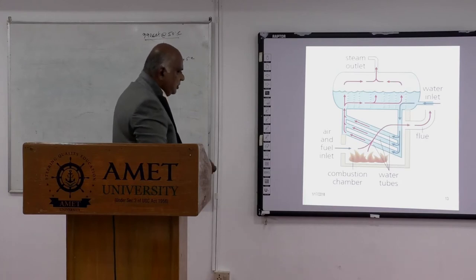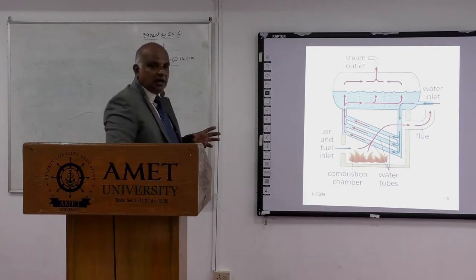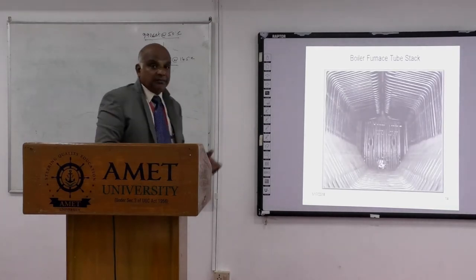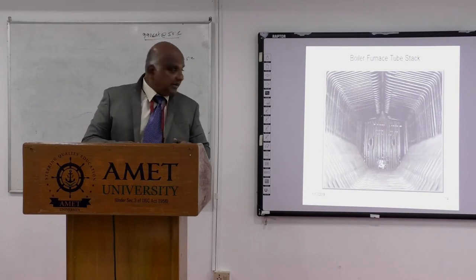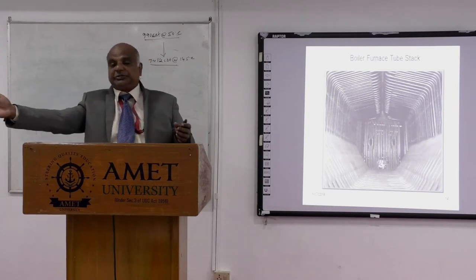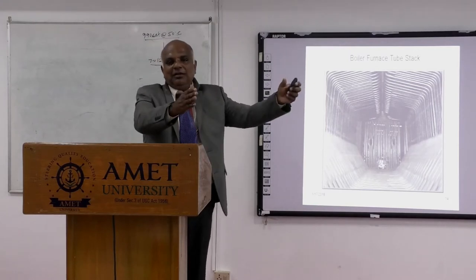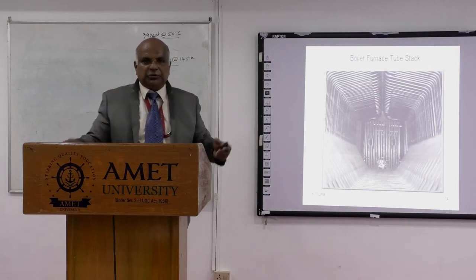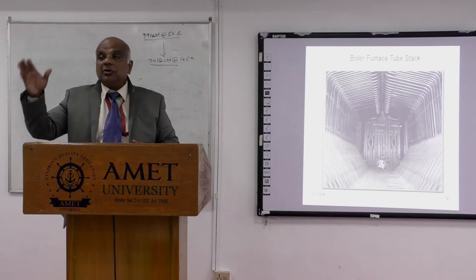The fuel and air mixture is burned continuously and the flue gas passes upward. Here you can see a larger boiler — we call it the Foster Wheeler D-type boiler — used in steamships. In a motor ship the boiler is small, with pressure up to six to seven kg per square centimeter.